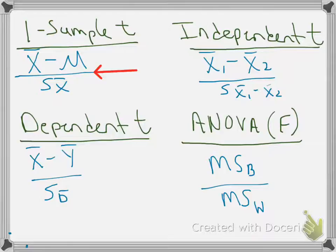The denominator of the formula is the standard error of the sample mean. So that formula repeats itself in all of the t-tests and ANOVA formulas. What we've got is an observed difference between means on the top, and then that's divided by the standard error on the bottom.